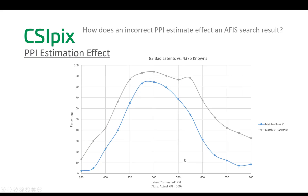This graph shows the results of APHIS searches I ran using 83 of the bad latents from the NIST27 database. The results for these latents show a similar pattern to the goods — detection gets worse the further away you get from the actual image resolution, and it's worse to underestimate than overestimate. You can pause the video here if you want to take time to look at the numbers in detail.